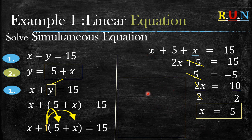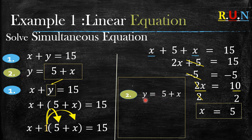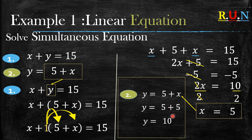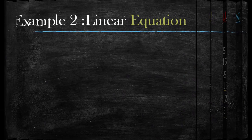Now that you know the x value, you can use any of the two equations to find y. Let's use the second equation: y equals 5 plus x. Since x equals 5, we substitute: y equals 5 plus 5, which equals 10. So for these two equations with two unknown variables, the answer is x equals 5 and y equals 10. It's as simple as that. Let's look at example number two.